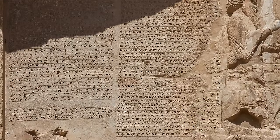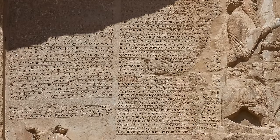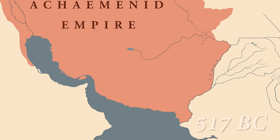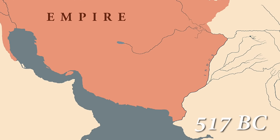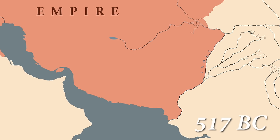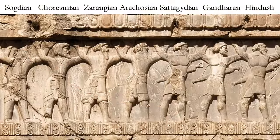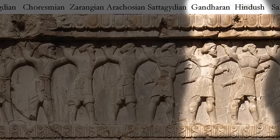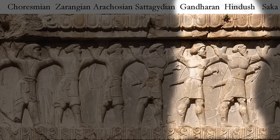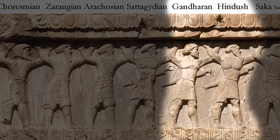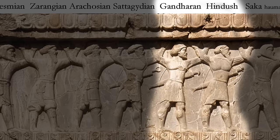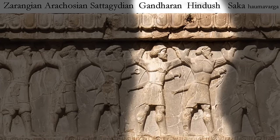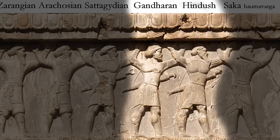Scholars believe it was Darius who, for the first time around 517 BC, established Achaemenid rule in the lower Indus valley. At Naqsh-e-Rustam, a person from the Hindush region, alongside a person from Gandhar, is depicted in the tombs of not only Darius but later Achaemenid kings as well. These representations show figures wearing loin clothes and sandals with exposed upper bodies.